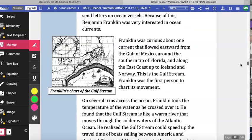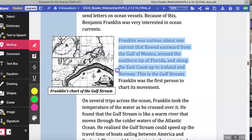Franklin was curious about one current that flowed eastward from the Gulf of Mexico, around the southern tip of Florida, and along the East Coast up to Iceland and Norway. This is the Gulf Stream. Franklin was the first person to chart its movement.